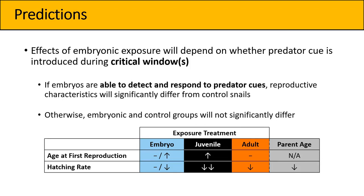I did not expect to see any delay from the adult group, since that exposure was so close to the onset of typical reproduction in the lab. For hatching rate, in longer-term exposure studies in our lab we saw substantial reductions in reproductive characteristics, and the Alden Hauser study also found impacts of predator cue exposure on hatching and offspring survival. We expected to see a decline in hatching rate with age, and I also expected all three exposure treatments to have some kind of negative impact on hatching rate.